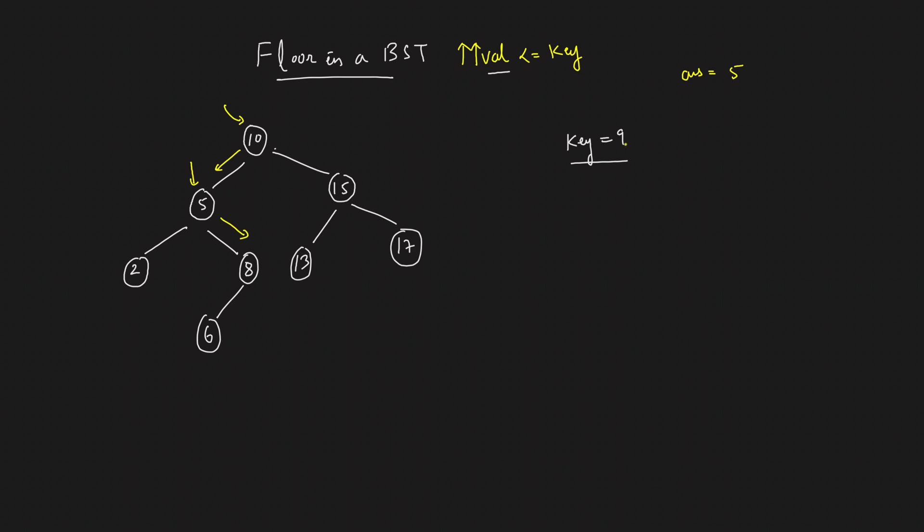Now you have an 8. That's lesser than 9. Yes, that's lesser than 9. So you can take this 8. So answer will be updated to 8. Now you want to increase this 8 further. You want to increase this 8 further. So what will you do? You will definitely move right. And the moment you move right, you reach null. So you can stop.